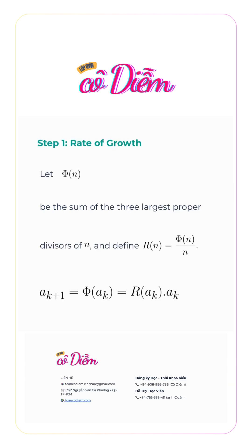Setup and key ratio. Let φ(n) be the sum of the three largest proper divisors of n, and define R(n) = φ(n)/n. By definition, a_{k+1} = φ(a_k) = R(a_k) · a_k.